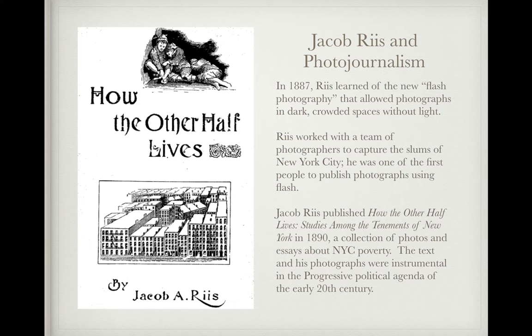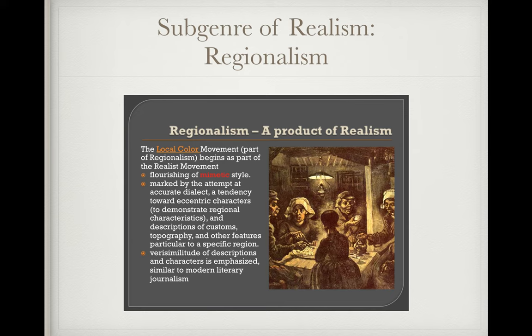There are two sub-genres of Realism, both found in classic works like Stephen Crane's 'Maggie: A Girl of the Streets.' First is Local Color or Regionalism — the idea is to mimic or portray local cultures as accurately as possible. It's like a newspaper report in some ways, but also celebrates accents, local dress, and local customs. Van Gogh's 'The Potato Eaters' is a good example — just trying to portray what it's like to live and behave in a certain area.